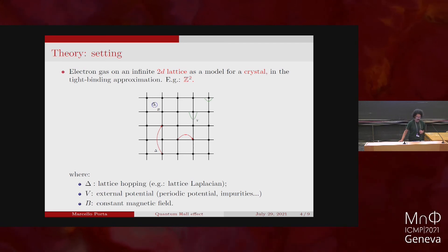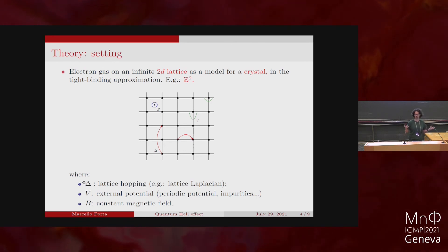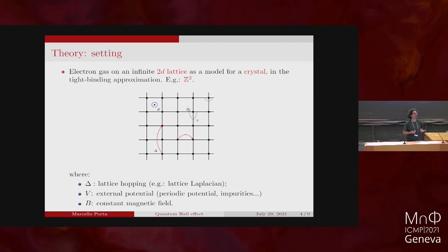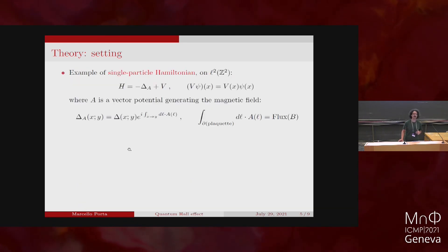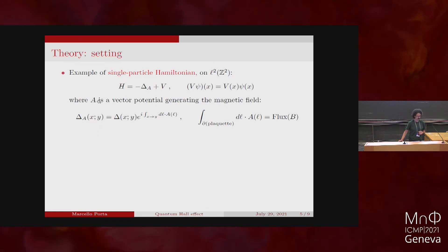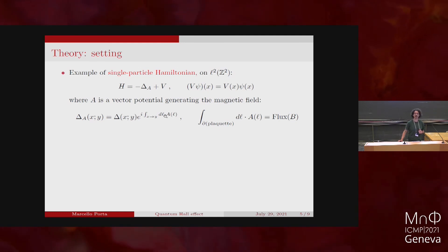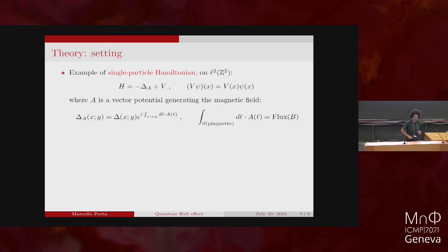The other elements we need: a transverse magnetic field, a hopping operator allowing jumps from one site to another, and a local potential V — which could include a periodic potential or describe the presence of impurities, for example a random multiplication operator. Putting these together, we get a Hamiltonian for one electron hopping on the lattice: a Laplacian coupled to an external field in a gauge-invariant way on a lattice, where the vector potential A generates the magnetic flux — integrating it over a plaquette gives the flux coming out of that plaquette.